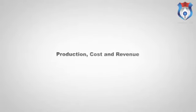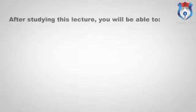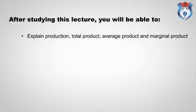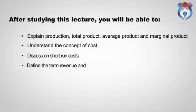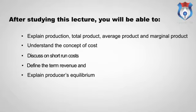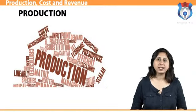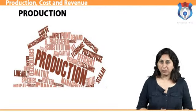Hello students, welcome to the lecture on production, cost and revenue. After this lecture we will be able to learn the following objectives: explain production, total product, average product and marginal product; understand the concept of cost; discuss short run costs; define the term revenue; and explain producer's equilibrium. Let us begin our lecture.